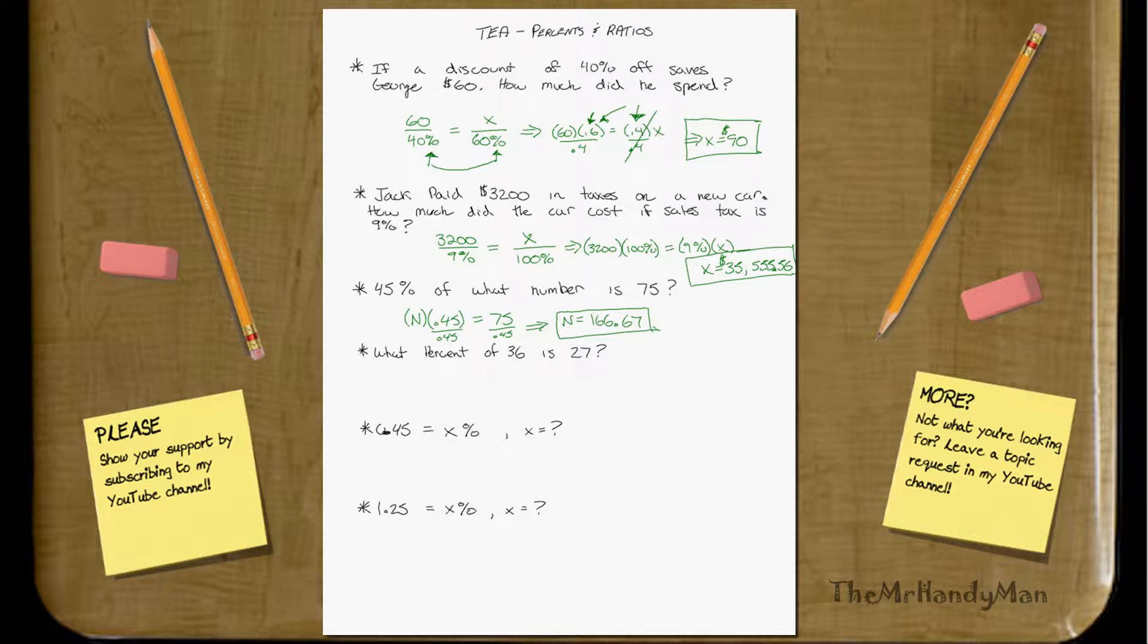What percent of 36 is 27? Well, that's the same thing as saying, how many times does 36 go into 27? 27 over 36. If you just solve that out, you'll notice that you can divide a 9 out by both sides. That means 3 over 4, which we know that one, 0.75, which in percentage is 75%. Because 0.75 equals 75%. Very good.